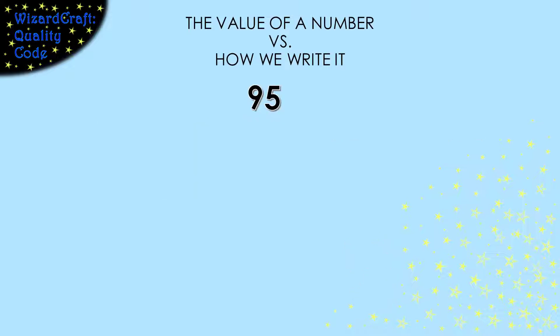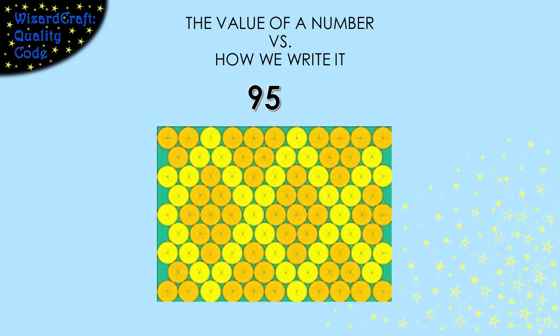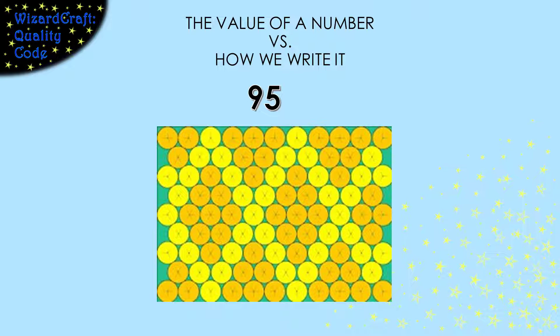When we're talking about numbers, there's an important distinction that we need to make. The value of a number is distinct from the way we write it. For example, here is the way we typically write the number 95. We write it as a 9 followed by a 5, but its value is a quantity. You can think of 95 circles. The number of circles is the quantity. The way we write it is a 9 followed by a 5.